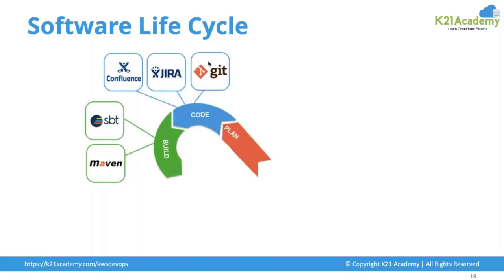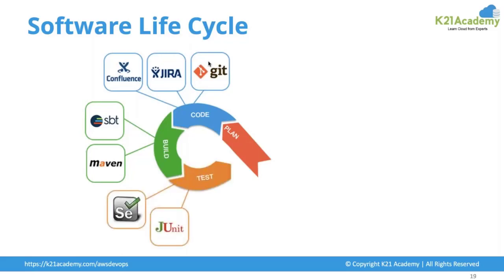Once you code it, you start building your application. In the IT market we use programming languages to build applications, but programming languages are not executable code — we need to convert them into executable code. Every application has several dependencies, packages, and variables, and we have to package and build it accordingly. For that we do a build process.